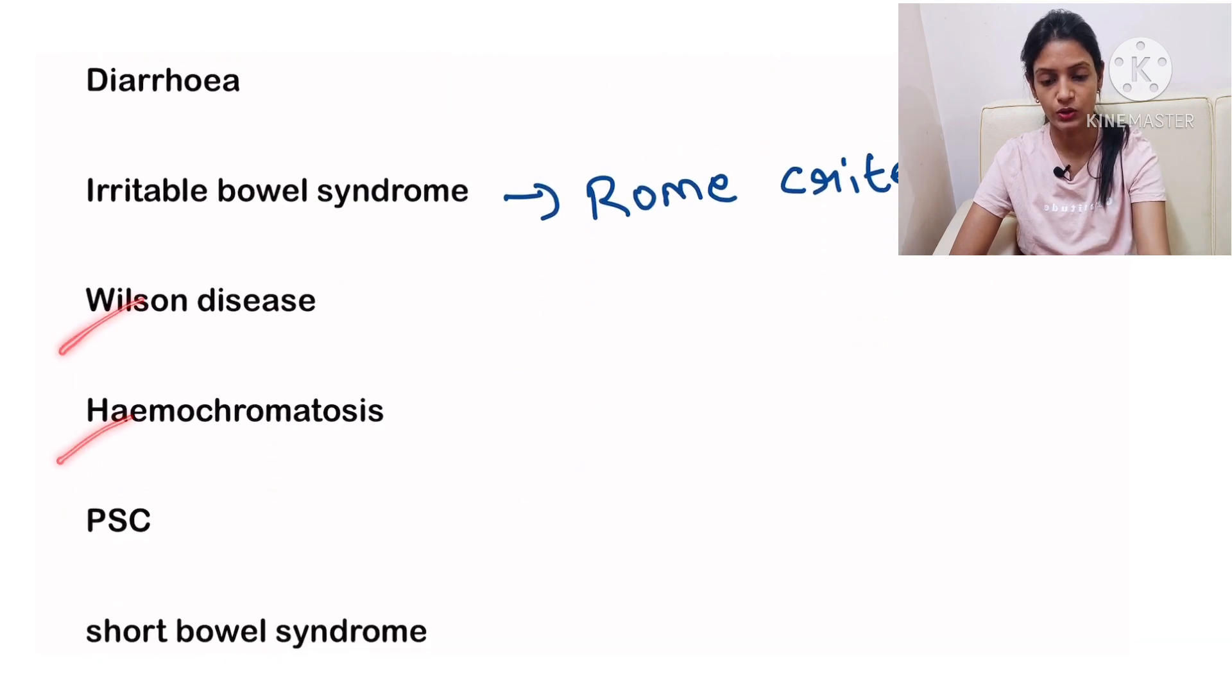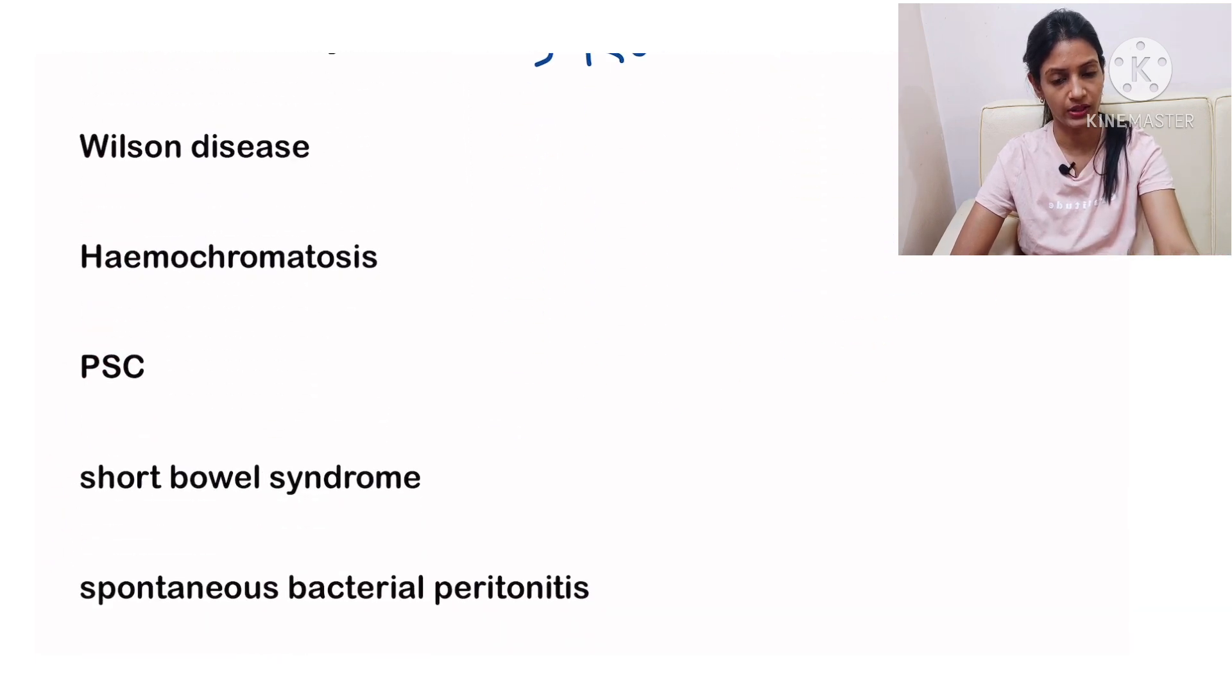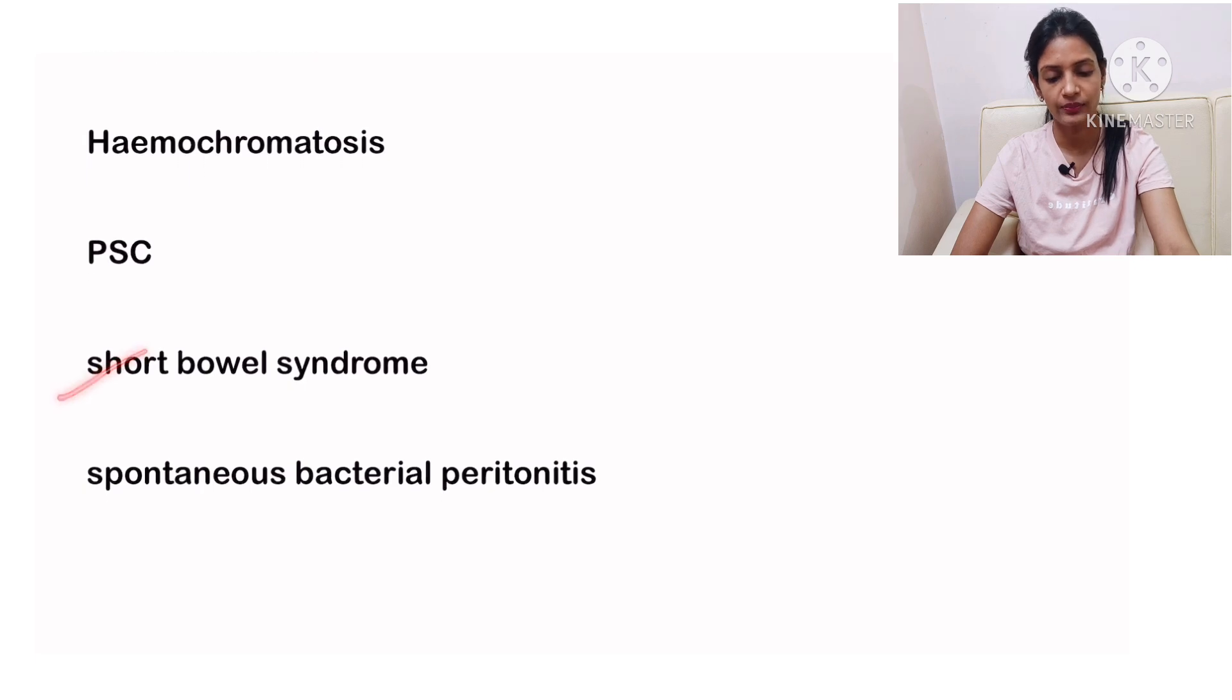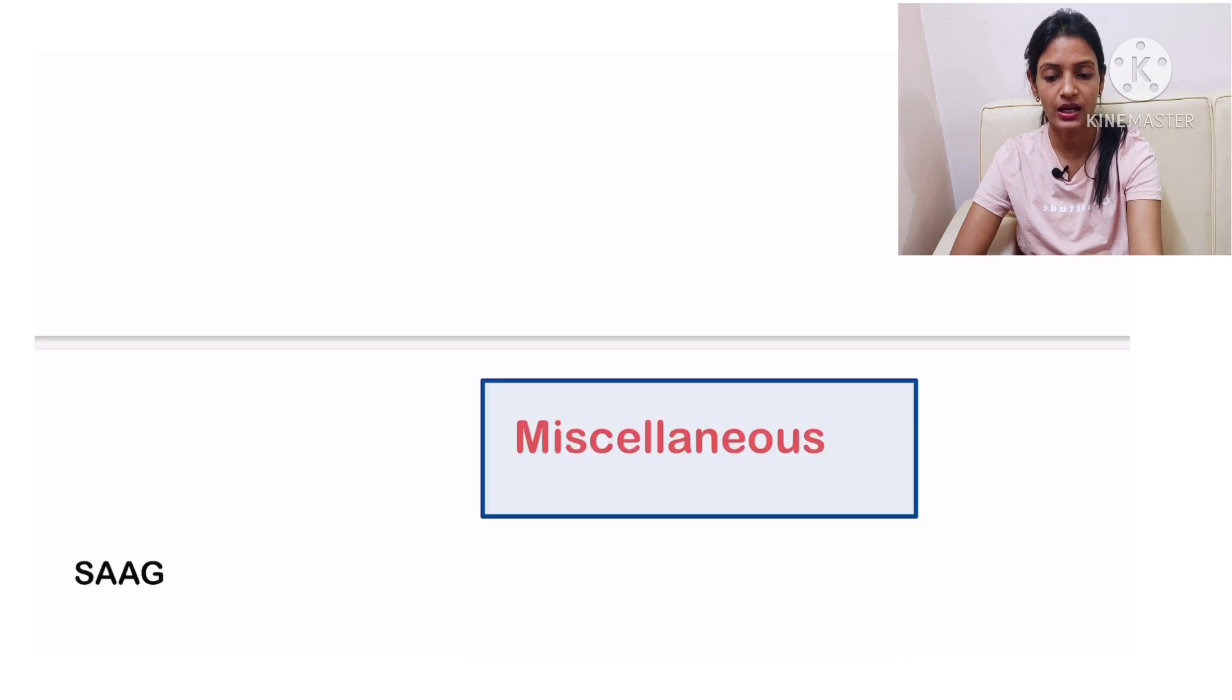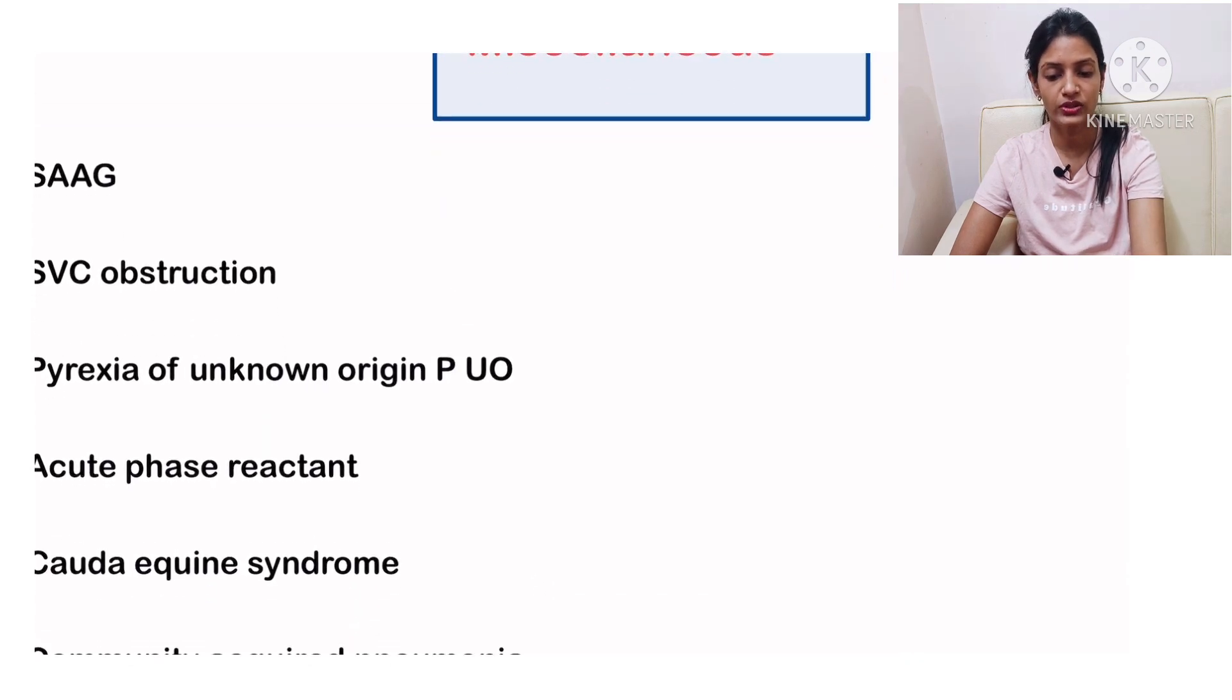In irritable bowel syndrome you must be knowing the Rome criteria, Wilson's, hemochromatosis, PSC, short bowel syndrome, and spontaneous bacterial peritonitis. It is from the GI unit. Next is miscellaneous.